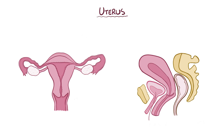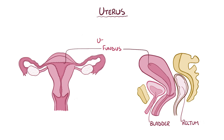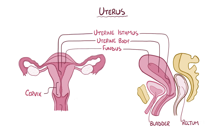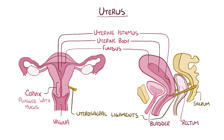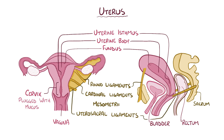The uterus is a hollow organ that sits behind the urinary bladder and in front of the rectum. The top of the uterus, above the openings of the fallopian tubes, is called the fundus, and the region below the openings is called the uterine body. The uterus tapers down into the uterine isthmus and finally the cervix, which protrudes into the vagina. The cervix has a superior opening up top and an inferior opening down below, both of which have mucous plugs to keep the uterus closed off except during menstruation and right before ovulation to allow sperm to reach the secondary oocyte. The uterus is anchored to the sacrum by utero-sacral ligaments, to the anterior body wall by round ligaments, and is supported laterally by cardinal ligaments as well as the mesometrium, which is part of the broad ligament.